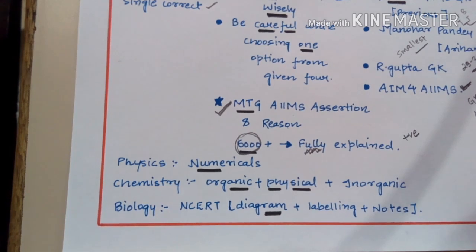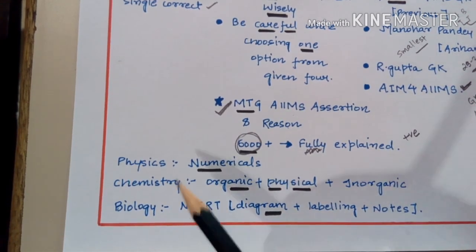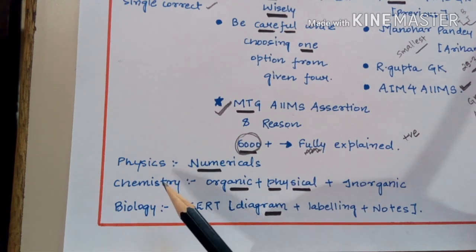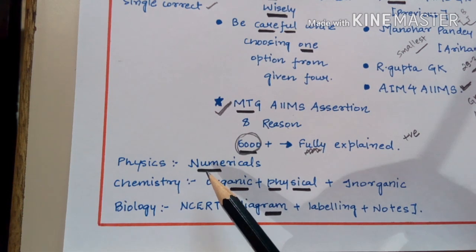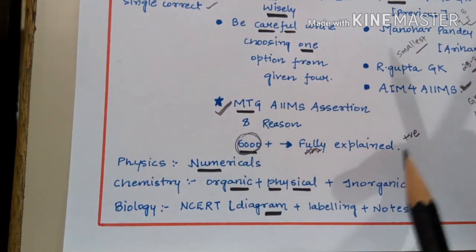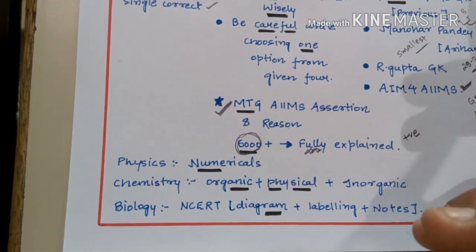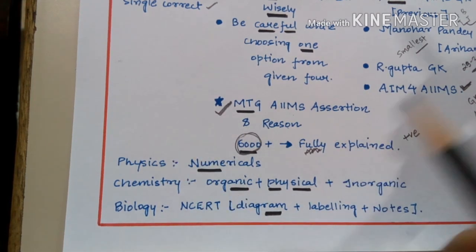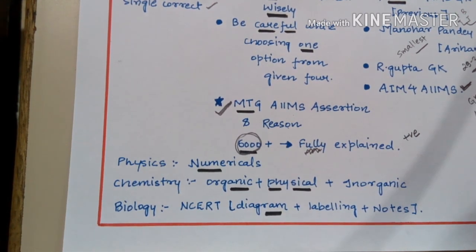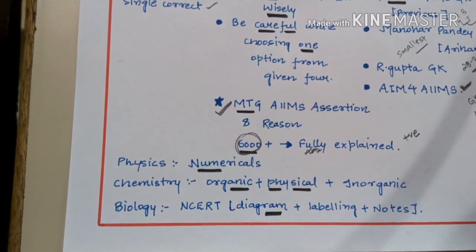What to read and what not to read: questions in AIIMS are conceptual as well as numerical based. Numerical questions take a lot of time because they are not simply formula-based. A key tip for solving physics problems is to have all formulas at your fingertips, plus knowledge of different concepts used in various phenomena. You must understand the concepts and implement them along with formulas into the types of questions asked.